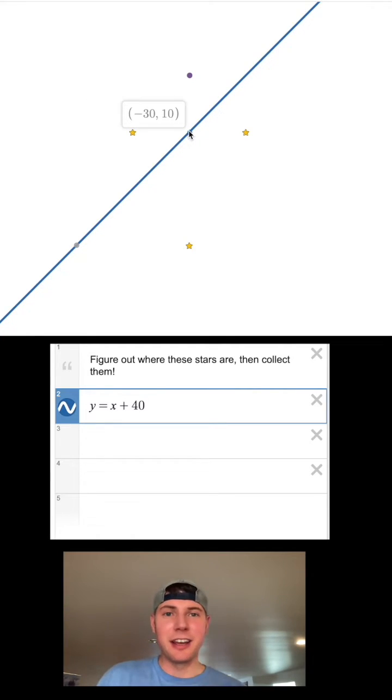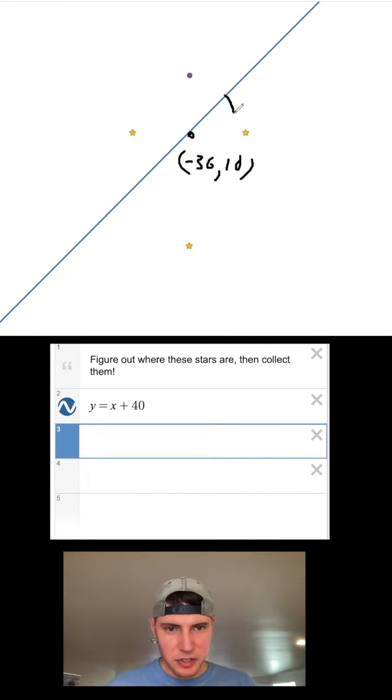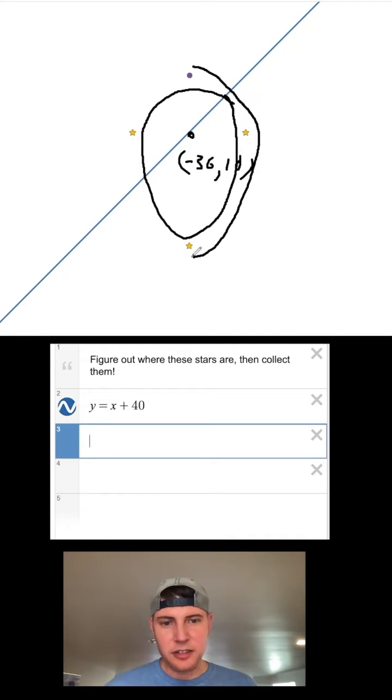This point right here looks to be about negative 30, 10. Let's label that with our pen, we'll say negative 30, 10. To solve this we can make an ellipse that goes like this, and let's do an outer ellipse that goes like this and forces this to hit all the stars.